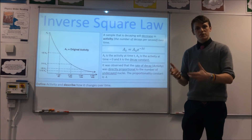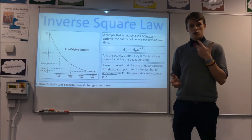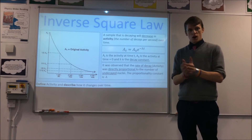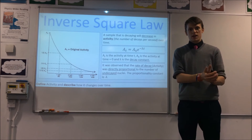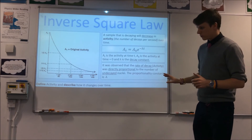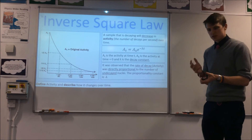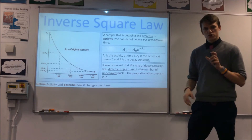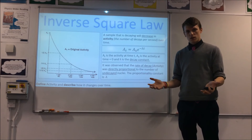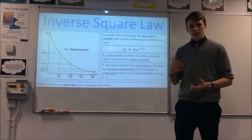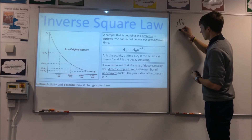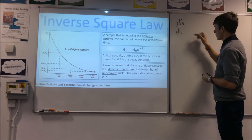We have A_t, the activity at any moment in time, equal to A_0, the activity at time zero, multiplied by e to the power of negative λt. Lambda (λ) is the decay constant — essentially the probability that one undecayed nucleus will decay in one second, a way of modelling probability. t is simply how long it's been. Scientists also noticed that the rate of decay, the activity, was directly proportional to the number of undecayed nuclei.